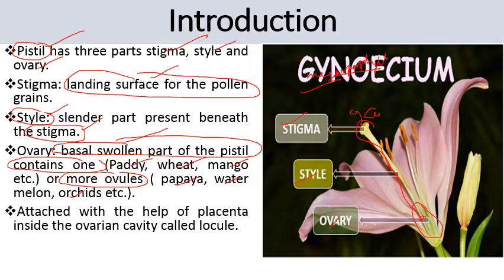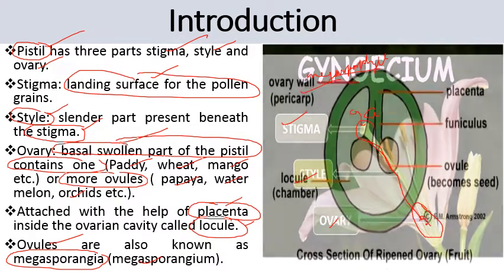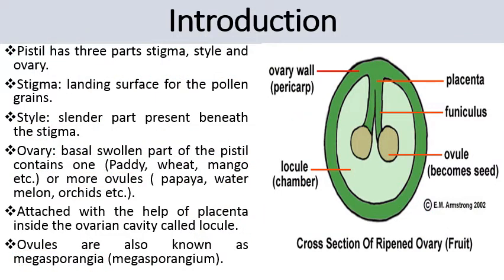Ovules are attached with the help of a structure known as the placenta, inside the ovule cavity called the locule. Ovules are also known as megasporangia — singular: megasporangium. The ripened ovary represents the fruit, and ripened ovules become seeds.